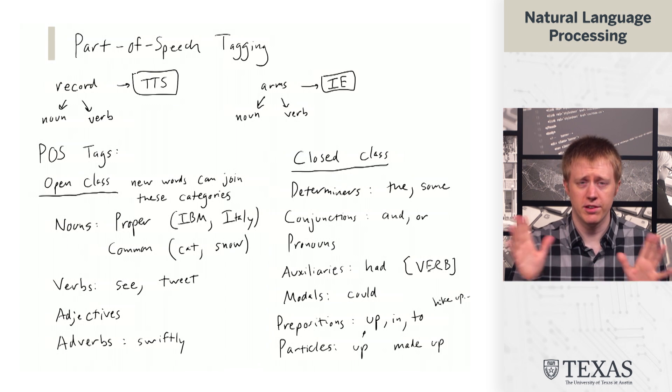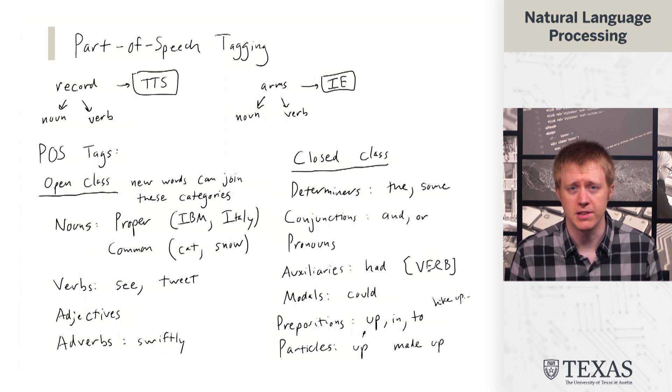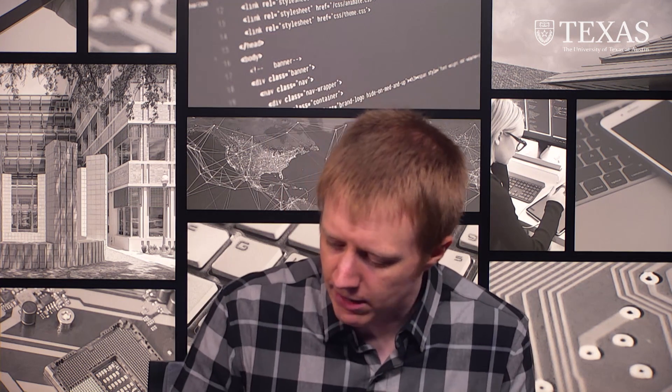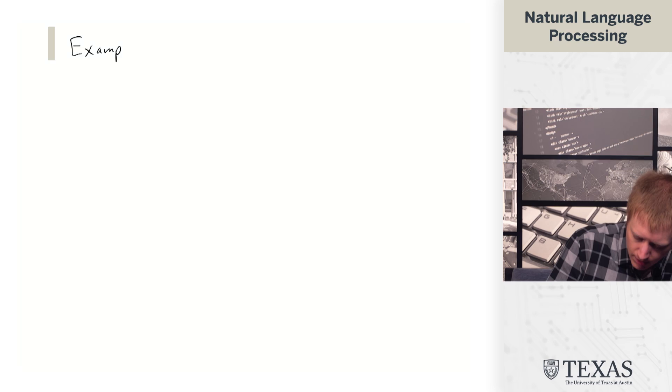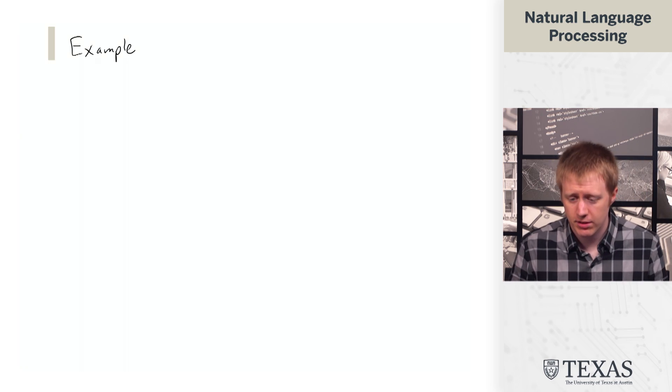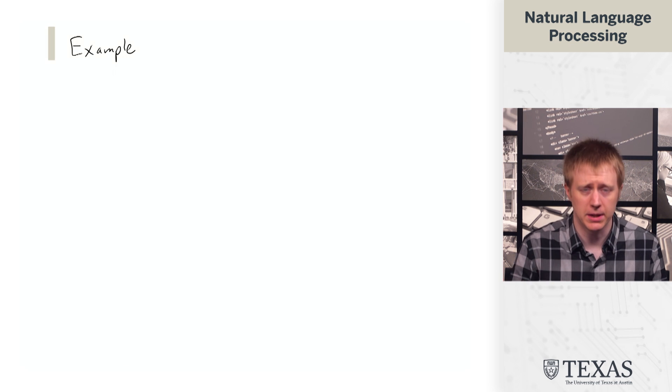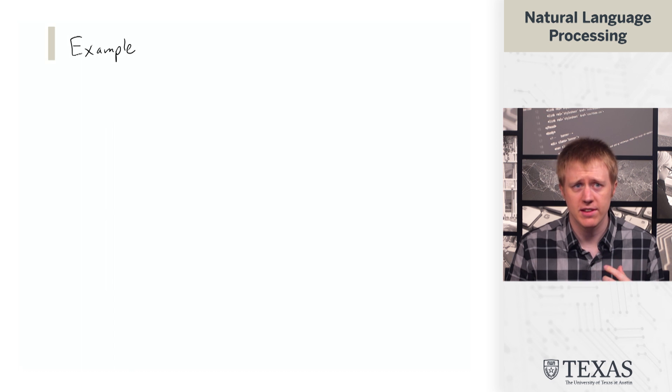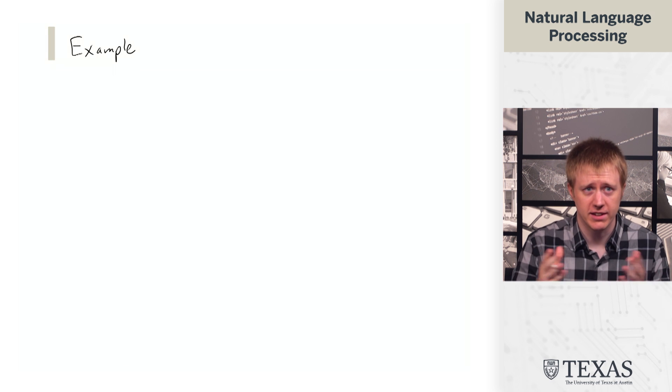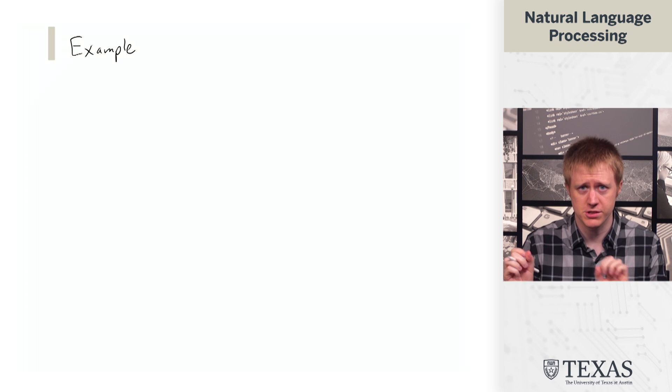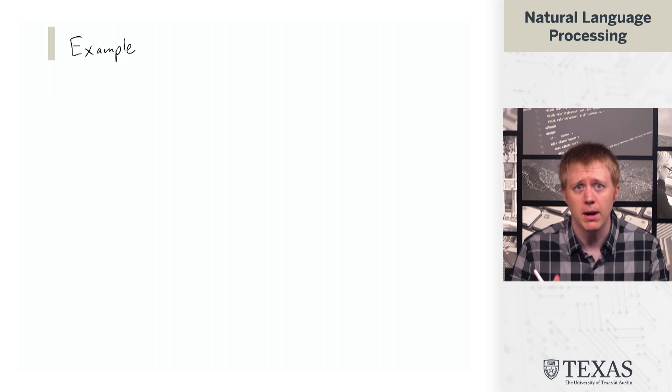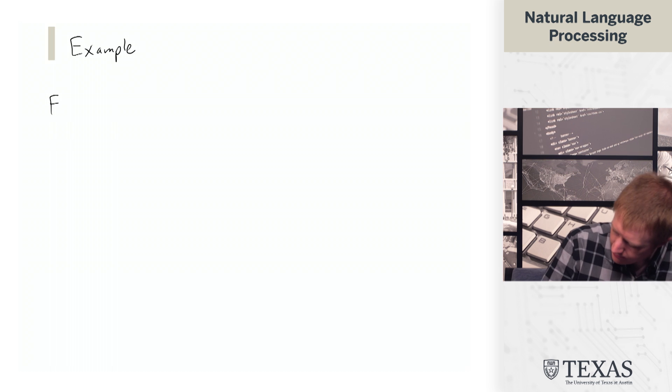These are examples—a crash course in some of the basic syntactic part-of-speech categories that we're going to see. Now let's look at an example. This example is going to help us think about what kinds of ambiguities show up and why this task of trying to take a sentence and analyzing what part of speech each word falls into might be difficult for an automatic system.